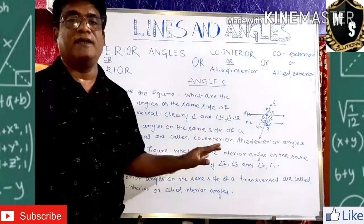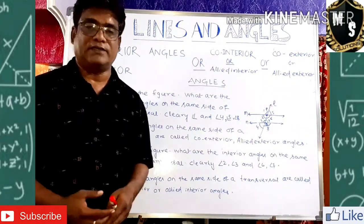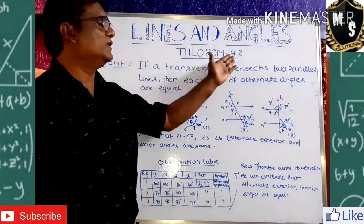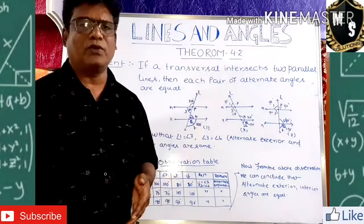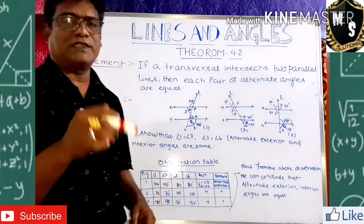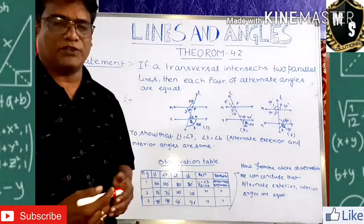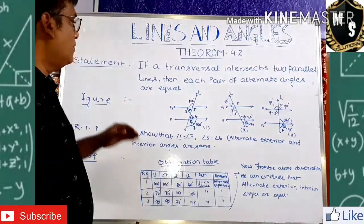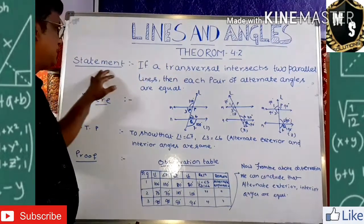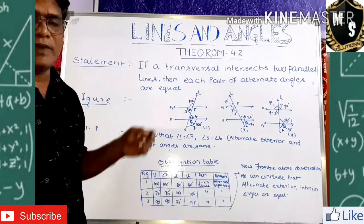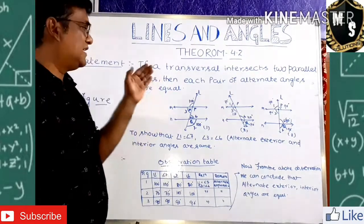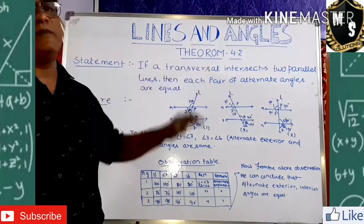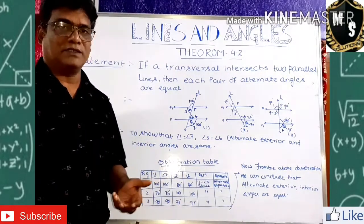Now come to the next part — there is a related theorem, Theorem 4.2. When writing a theorem, first write the statement, then the figure, then RTP (Right To Prove), then the proof — all in one line format. The statement will come in the question paper, so remember it carefully.